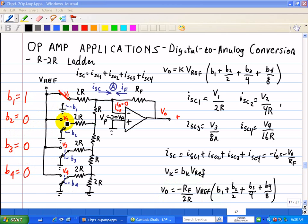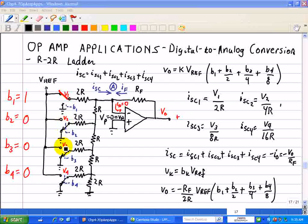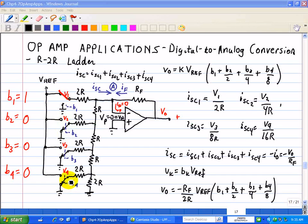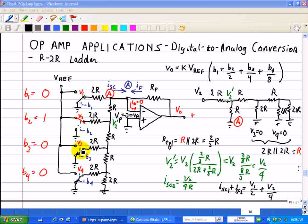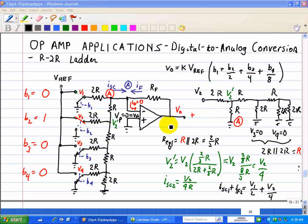Now, we're going to look at the contribution due to V2, then V3, then V4. Again, the analysis gets kind of unwieldy, but I think if you hang in there, you'll see the pattern. We're going to take a look at the contribution due to V2. So, that means that we connect V2 to V reference, and every other input, V1, V3, and V4, are set equal to 0.